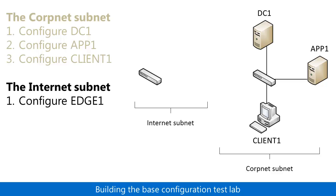In Step 1, you add the computer named Edge1 and join it to the corp.contoso.com domain. Note that Edge1 is not configured to perform any routing between the two subnets or any remote access VPN or proxying services. These capabilities are left to other TLGs.